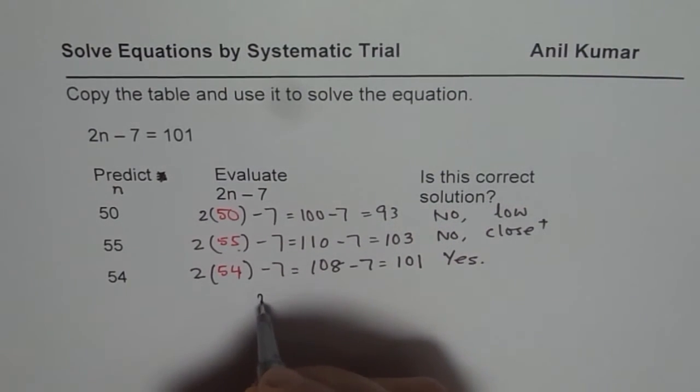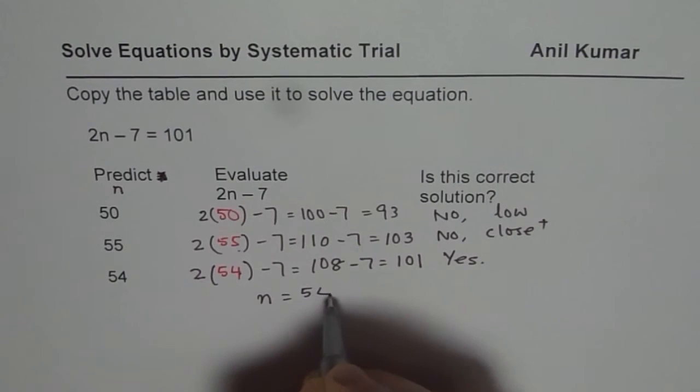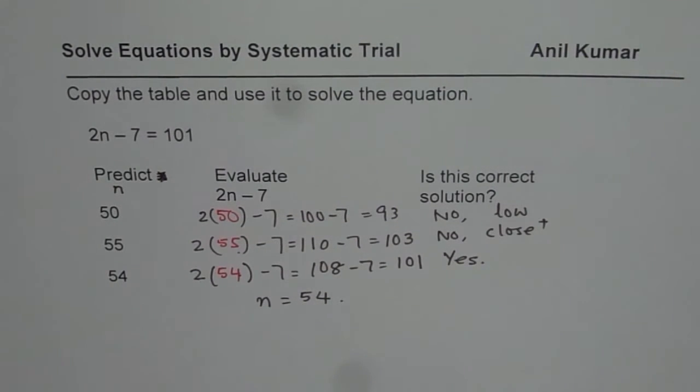So if you get the correct answer, you say n equals 54. That is the solution. So that is how you can solve an equation using the systematic trials method. Thank you.